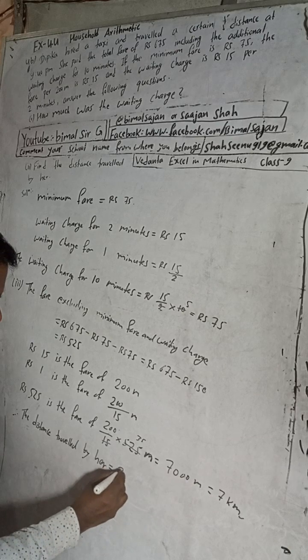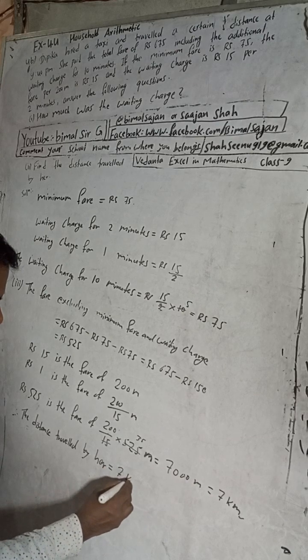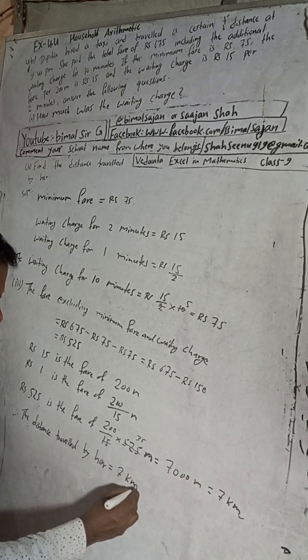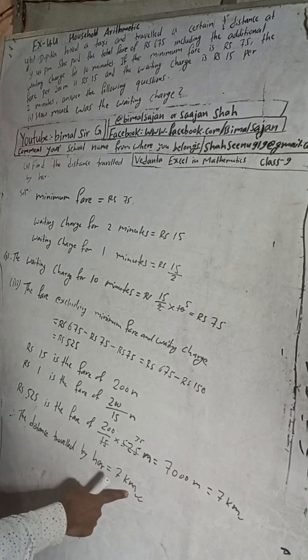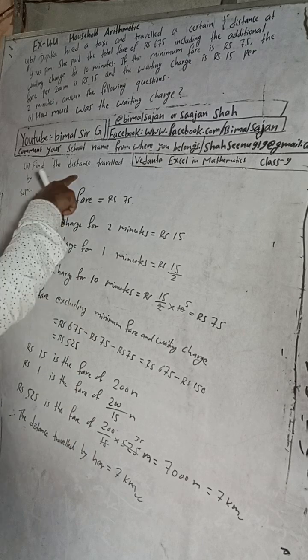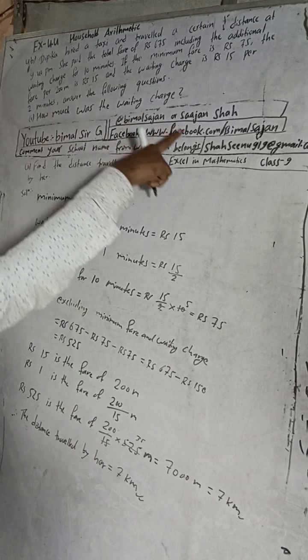So there are two answers: answer one — the waiting charge for 10 minutes is Rs 75; answer two — the distance traveled is 7 kilometers.